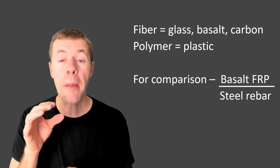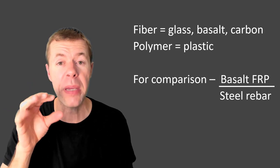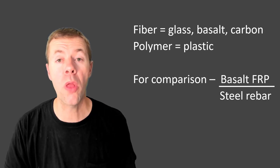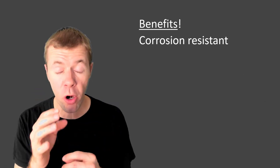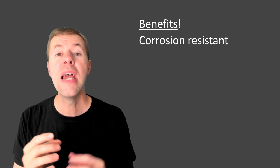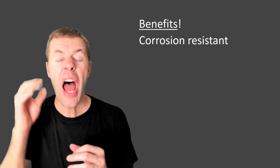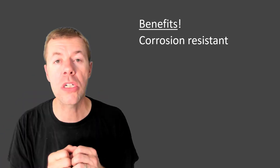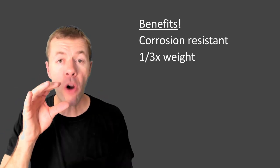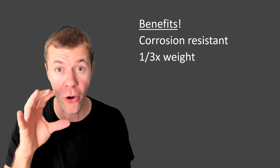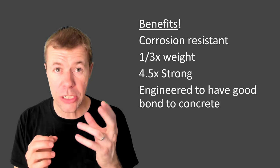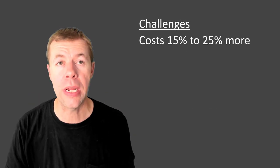Now for comparison, I'm going to compare basalt FRP to steel FRP in some of these numbers below. There are tons of benefits of FRP but the most important one is that they're corrosion resistant. Outside chemicals can penetrate inside your concrete and they won't cause corrosion. Also FRP bar weighs about one-third what steel does. It's 4.5 times stronger and it's engineered to have great bond to the concrete.